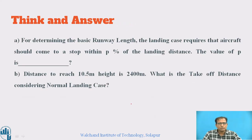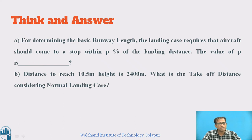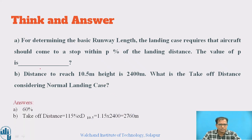Let us review: for the normal landing case, the aircraft comes to a stop within P percent of the landing distance — that P is 60 percent. For the normal takeoff case, if D10.5 is given, the TOD is 115 percent of D10.5. For example, if D10.5 is 2400 meters, then TOD = 1.15 × 2400 = 2760 meters.